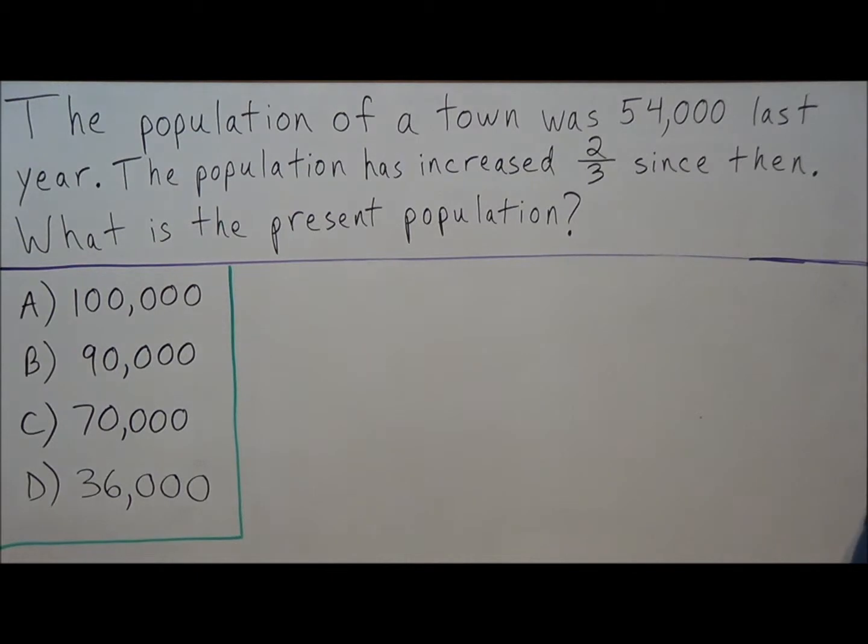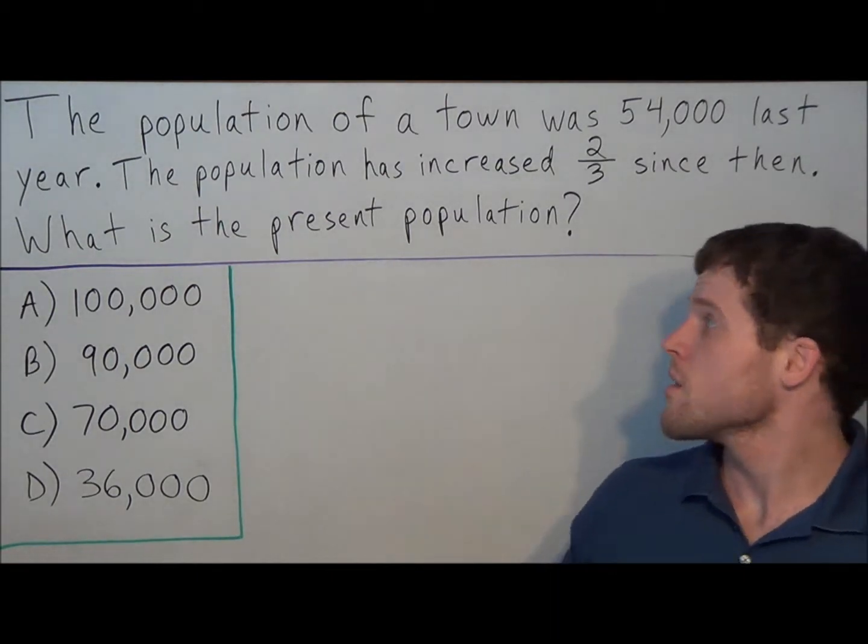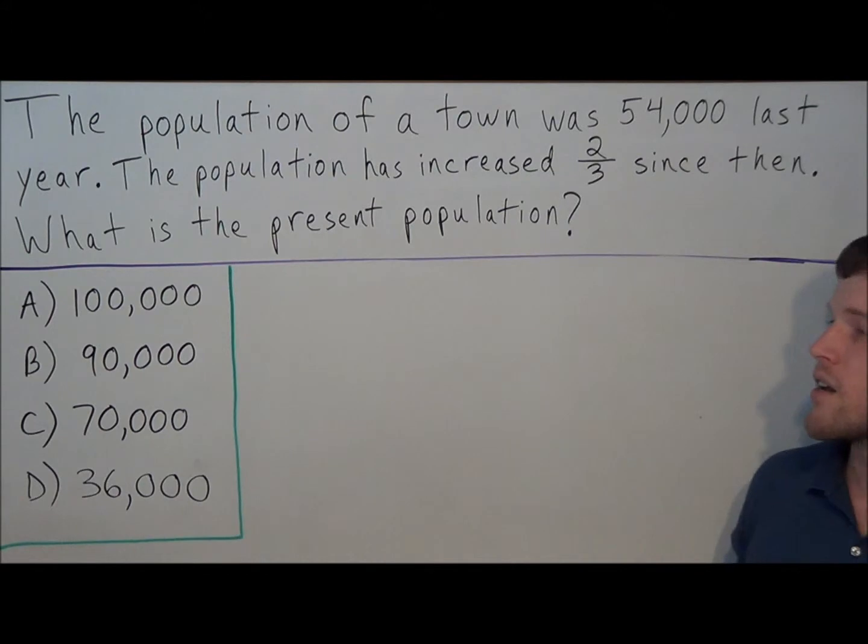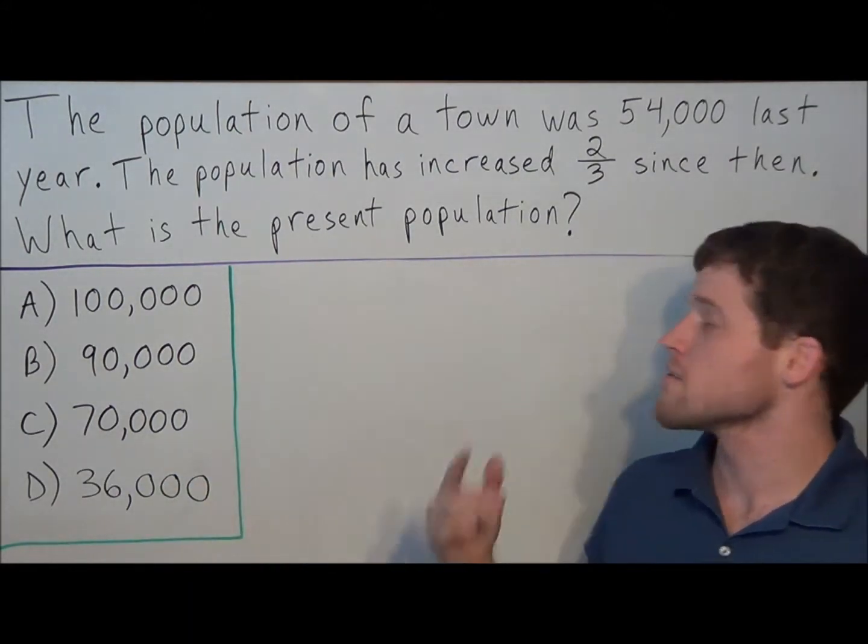So we have the population of a town was 54,000 last year. The population has increased two-thirds since then, and we want to know what is the present population.